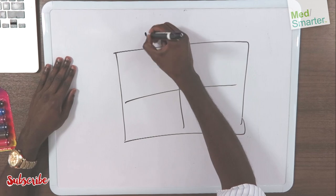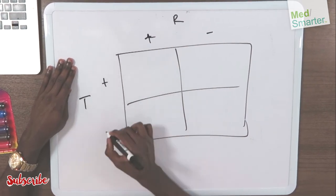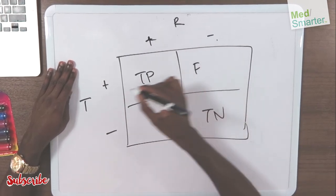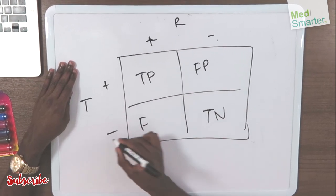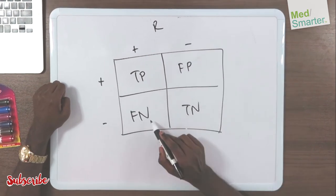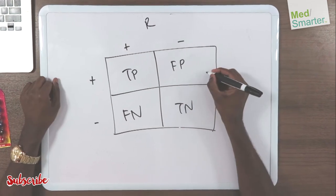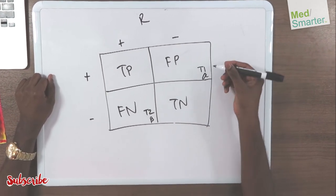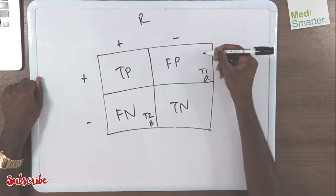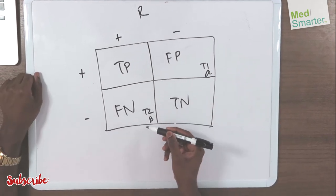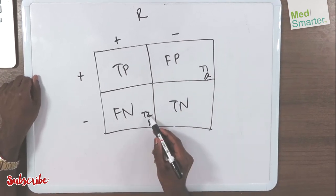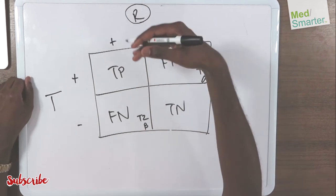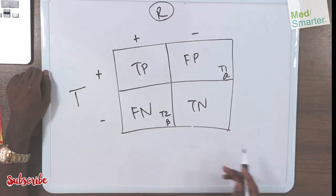To summarize the 2x2 table: positive + positive (reality and test) = true positive; negative + negative = true negative; positive + negative = false positive; negative + positive = false negative. Also note that false positive is a Type 1 error, also known as alpha, and false negative is a Type 2 error, also known as beta. Remember: 1 and A are higher, so they're on top; 2 and B are lower.